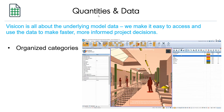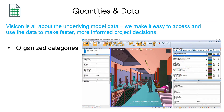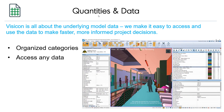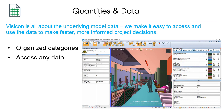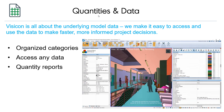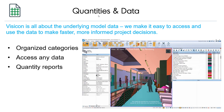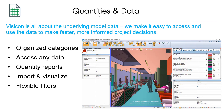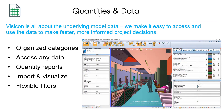Model data is already organized by component type, material, Revit family, discipline, and more. Component data is not buried deep in a selection tree, but freely accessible with a click of a button. Running detailed quantity reports grouped by any category is fast and simple. Import and visualize any external data, and take advantage of flexible filters to interrogate models and find what you're looking for.